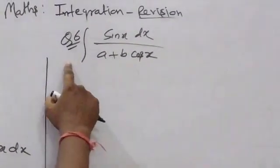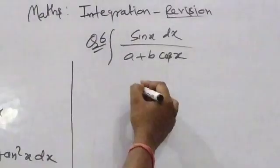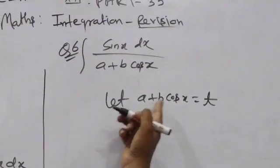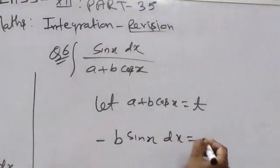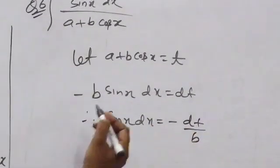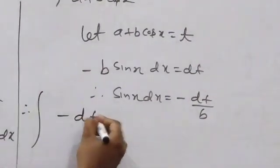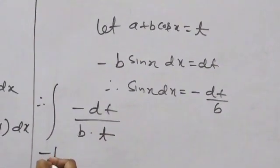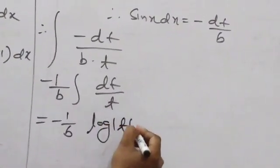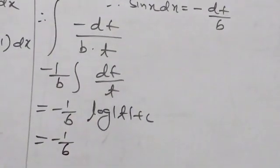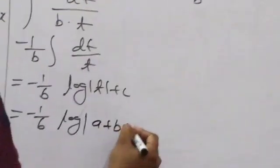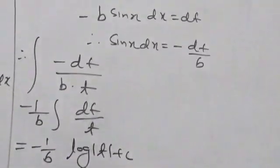Question number 6: integration of sin x/(a + b·cos x) dx. Let a + b·cos x = T. Differentiating: b·(-sin x) dx = dT, so sin x dx = -dT/b. Therefore the integral = (-1/b)·∫dT/T = (-1/b)·log|T| + C = (-1/b)·log|a + b·cos x| + C.